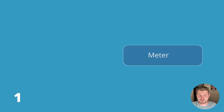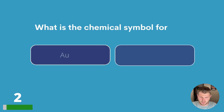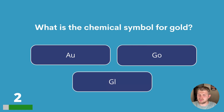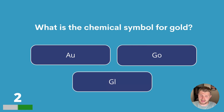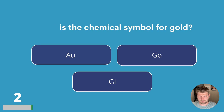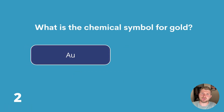Question two. What is the chemical symbol for gold? AU, GO or GL? The answer is AU.